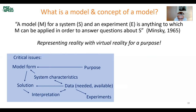Some critical issues of modeling: we want to represent reality with virtual reality for a purpose, so one key issue is the purpose and system characteristics — these are connected to the model form. The model form defines the solution strategy. To solve the model equations we need data; data is also connected to interpretation. Data must come from experiments, so experiments are also central. Data is important and central to all modeling activities.